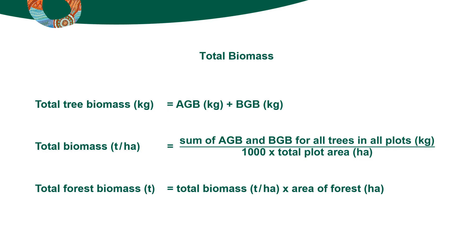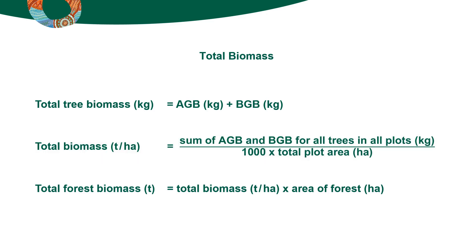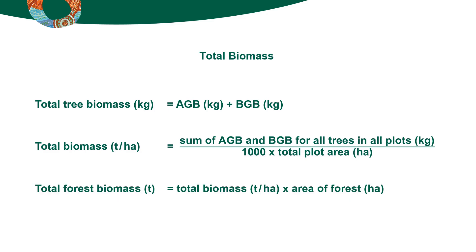For an entire forest or stratum, biomass is often expressed in tonnes of dry matter per hectare. So to calculate this figure, add the total biomass of all the trees in all plots in kilos, then divide by the total plot area and by 1000 to convert from kilos to tonnes. The total forest biomass can also be expressed in tonnes.